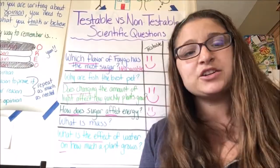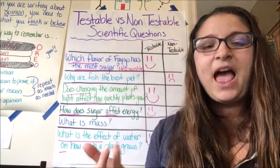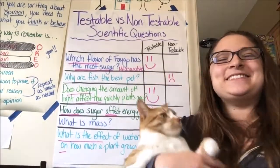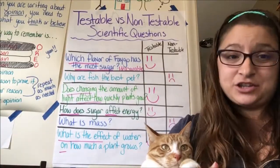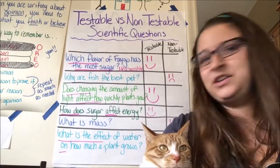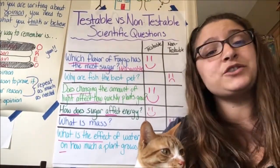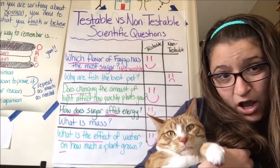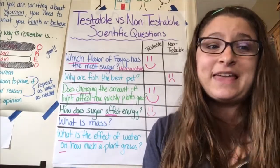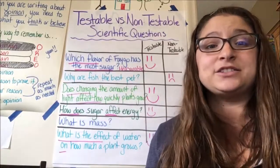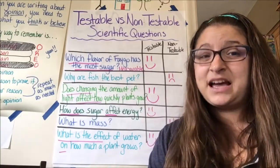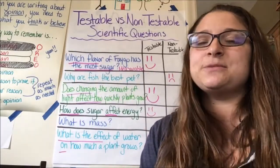The biggest thing to think about when finding a testable question for a scientific experiment: can you take that question and create steps for it? After you have those steps, are you able to measure the outcome? Can you measure how tall a plant would grow? Yes, you can. If you were to say how does music affect a plant's feelings, you don't know the plant's feelings. But if you say how much does music affect how a plant grows, you can measure that. When you're thinking of a testable question, it's going to be something where you can measure the outcome. And remember, a good scientific question once answered will lead to other good questions. If you find out which flavor of Faygo has the most sugar, you might next want to know what other pops have a lot of sugar. A good scientific question leads to more scientific questions.